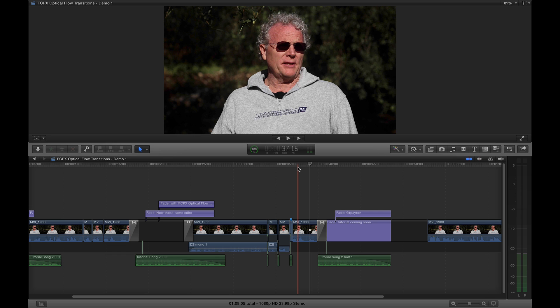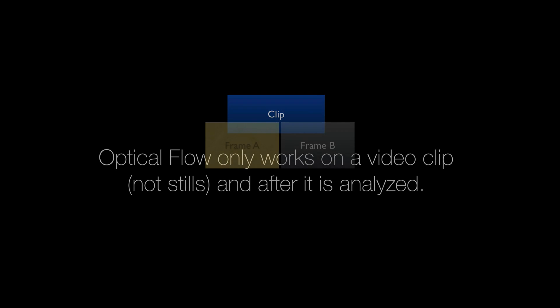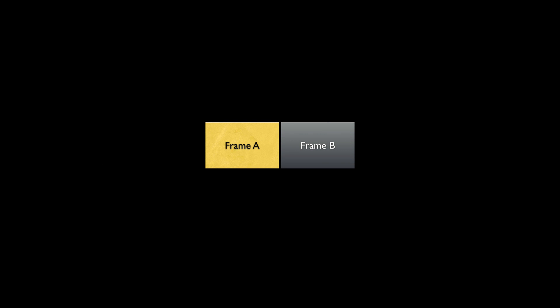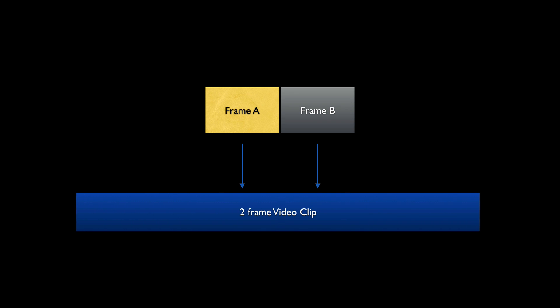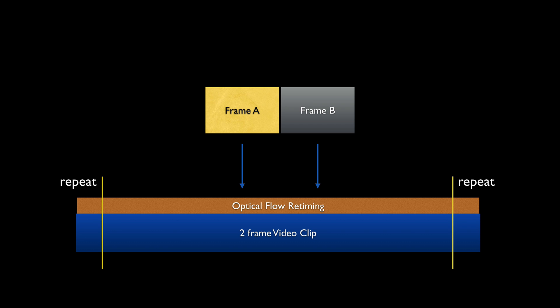Let me show you how to pull this off. A little bit of theory: optical flow only works on a video clip, not stills, and after it's been analyzed. So we need frame A and frame B inside a single video clip — actually a two-frame video clip. Then we're going to take that two-frame video clip, stretch it out, and apply optical flow retiming to it. We've got one more step: there will be extra frames repeated on the top and tail of the optical flow, so we need to get rid of some of frame A and frame B to make this work properly. It's actually quite easy once you get into it.